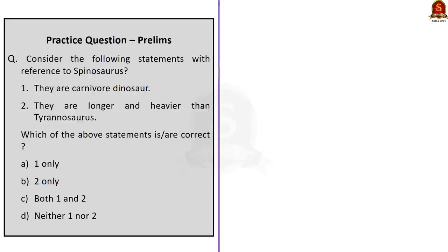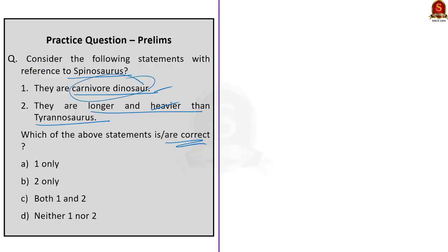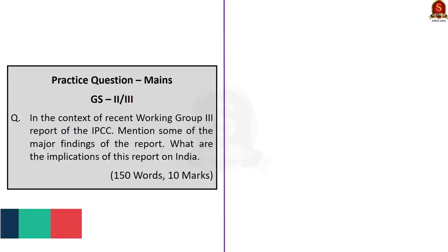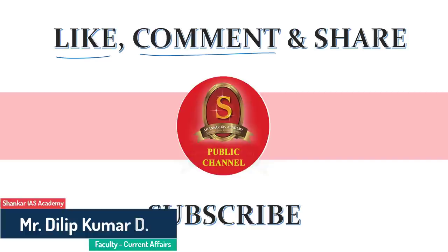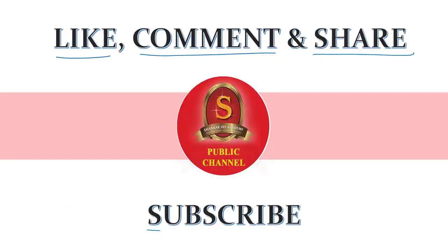Question 4: Consider the following statements with reference to spinosaurus. Statement 1: They are carnivorous dinosaurs. Statement 2: They are longer and heavier than Tyrannosaurus. Both statements are correct — they are carnivorous dinosaurs with adaptations enabling them to eat fish, and they are indeed longer and heavier than Tyrannosaurus. So the correct answer is option C — both 1 and 2. A main question is displayed here — write your answer and post it in the comment section. If you like the video, hit the like button, post your comments, share the video with your friends, and don't forget to subscribe to Shankar IAS Academy YouTube channel. Thanks for watching.